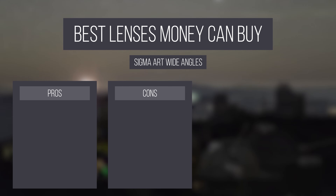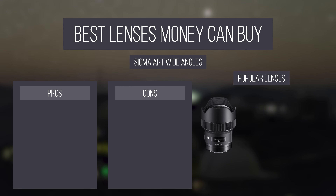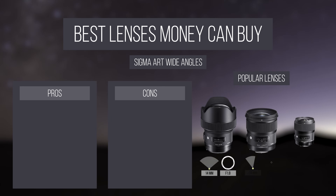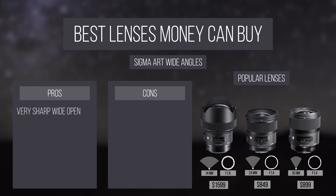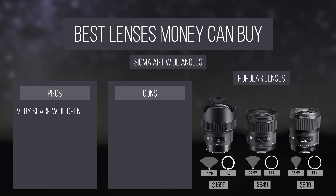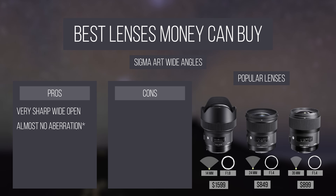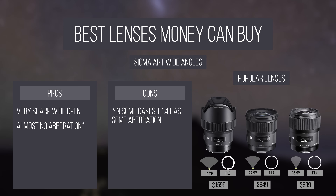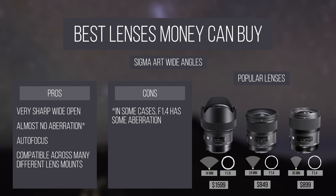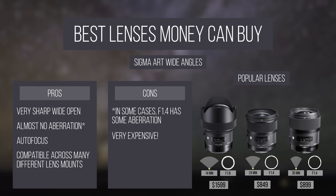Sigma's Art lineup of lenses are fantastic astrophotography lenses. They are some of the sharpest lenses on the market, even wide open, and have virtually no chromatic or comatic aberrations once they are stopped down to f2.8. They also have autofocus, and are available for many lens mounts. But you pay a premium for this quality, and these lenses do not come cheap.